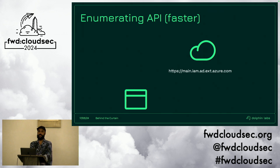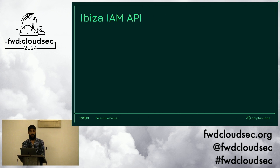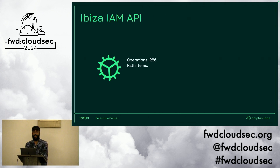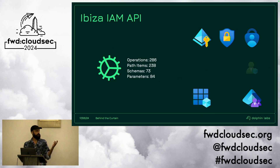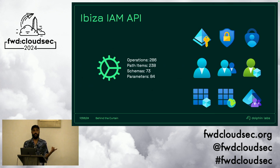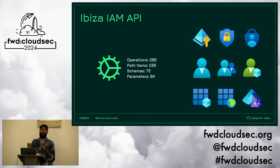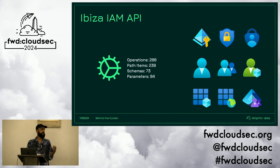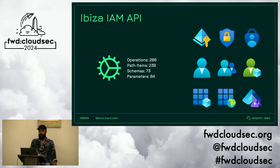So what did we find? What functionality is available in this API? Quite a lot, actually. I found just shy of 300 operations available through this API — 286 distinct actions I can perform against Microsoft Entra: authentication management such as MFA, conditional access policy, users, groups, applications, B2C tenants. That's a lot of functionality exposed through here.